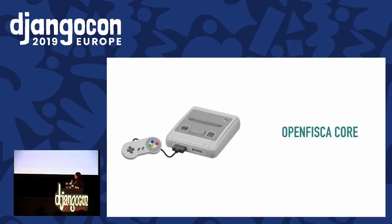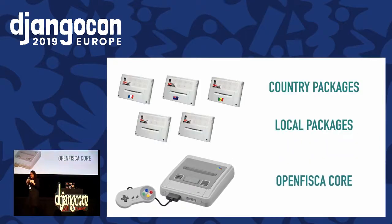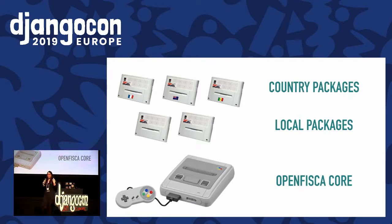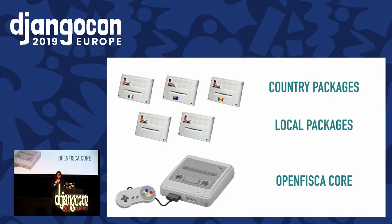So how does it work? OpenFisca is like a game console. You have one big engine called OpenFisca Core, and then you have several cartridges that are the country packages. You have one engine and you can have the Tunisian cartridge, the French cartridge, the one for New Zealand, and also local cartridges such as the city of Barcelona or help from the city of Paris. The core is vectorial computing, which means you can run simulations on millions of households at a time, which is great for researchers using OpenFisca on anonymized databases of the French tax system.